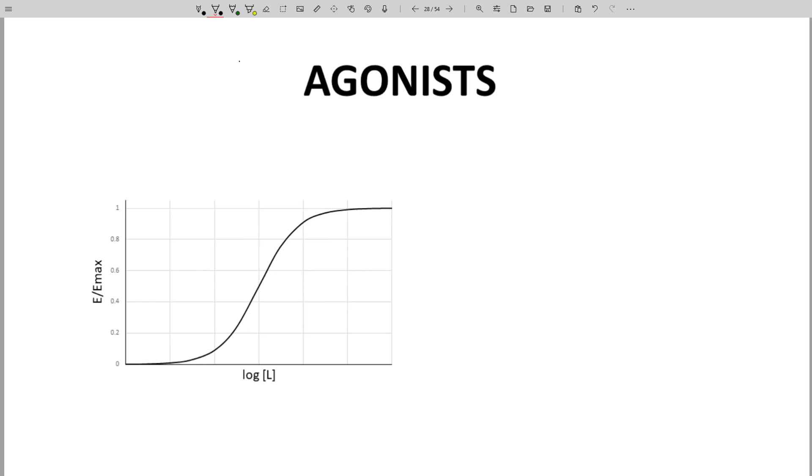Below is a curve for a full agonist. Full agonists bind, and once they reach a high enough concentration on the x-axis, can achieve a full response 100% or 1 on the y-axis.